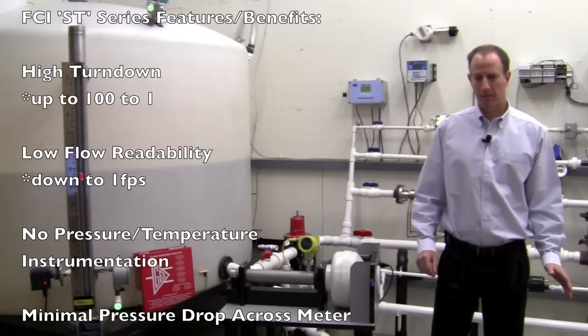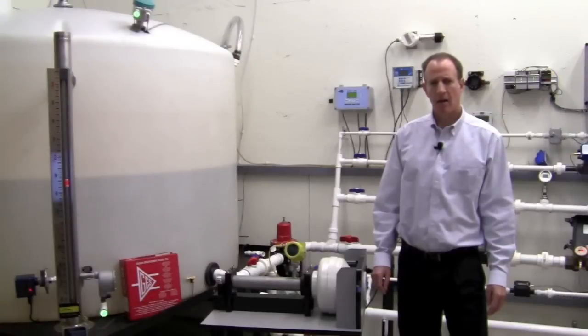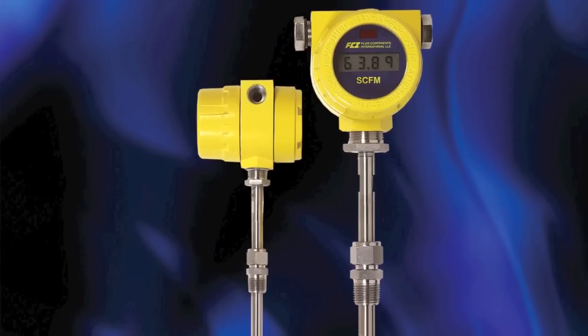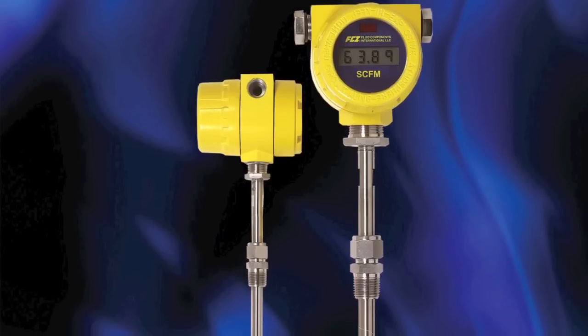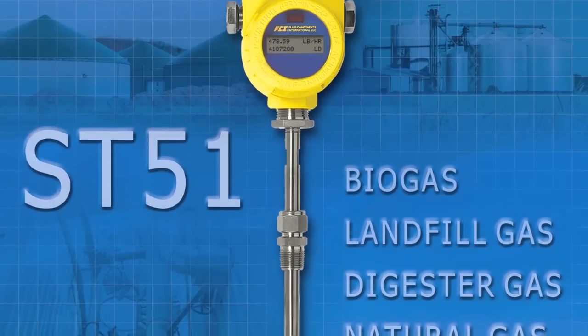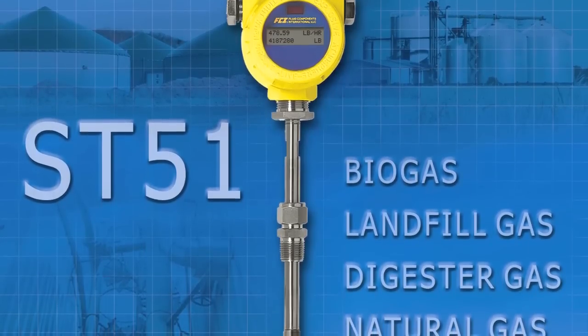Minimal pressure drop. The flow sensor creates little pressure drop even at high flows. There are several versions of the ST series flow meter. The ST50 is a low-cost insertion flow meter for air applications. The ST51 can be used for other gases including natural gas and biogas.